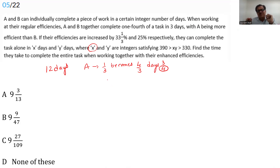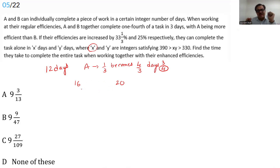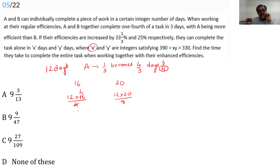Multiples of 4 between 12 and 24 are 16 and 20 — just two trials. If A is 16 days: B = (12×16)/(16−12) = 48 days. If A is 20 days: B = (12×20)/(20−12) = 240/8 = 30 days.